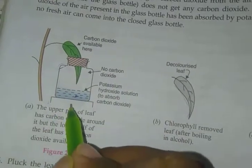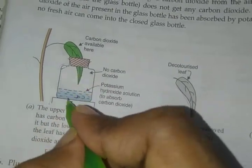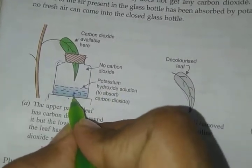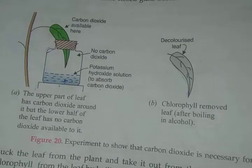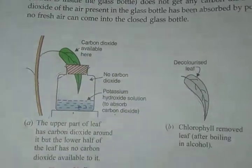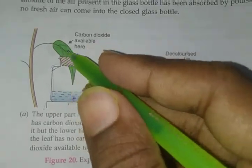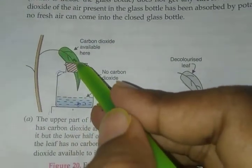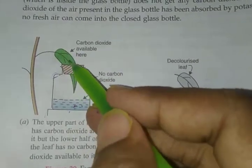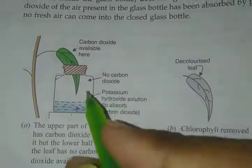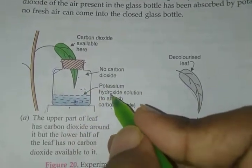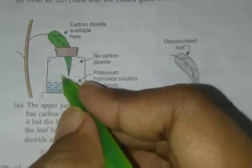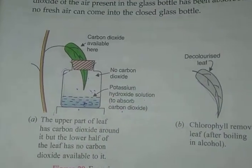This is a flat-bottom glass jar where we are storing potassium hydroxide, which has the capability to absorb carbon dioxide. We will close the mouth with a cork, but the cork should be sliced so that a leaf can be inserted through it. After de-starching, bring the leaf and put it inside the jar so that half the leaf is inside the jar and the other half is outside. The outside part has access to carbon dioxide, while the inside part does not — because potassium hydroxide has absorbed all the carbon dioxide inside.